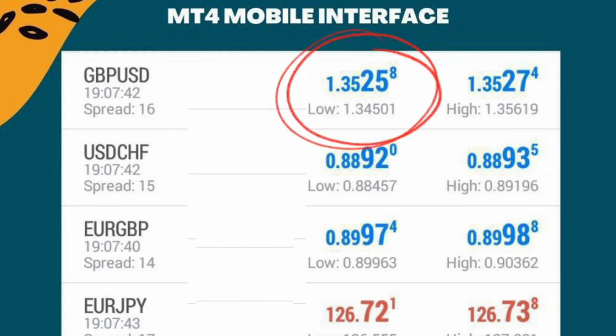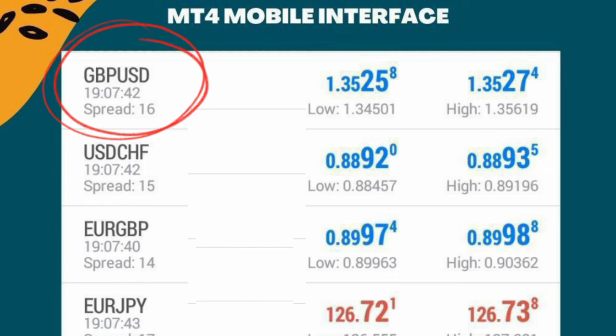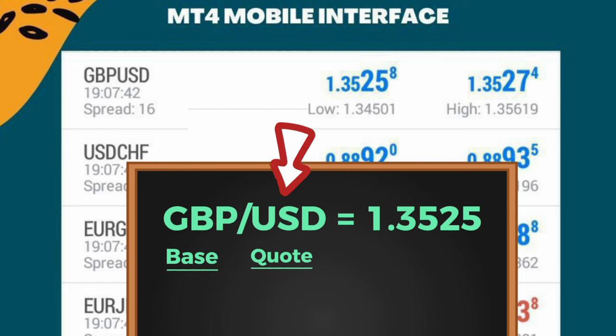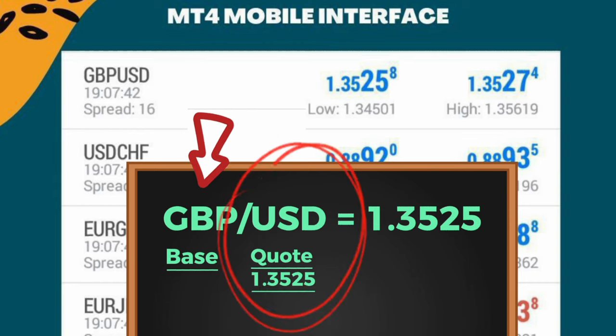Beside each of those pairs you will see a set of numbers. Focus on the first number for now. For example, GBP/USD is showing 1.3525. That number is telling you how many units of the quote currency you will need to get one unit of the base currency. In this case, to get one GBP you need 1.3525 USD. For now, ignore the superscript.